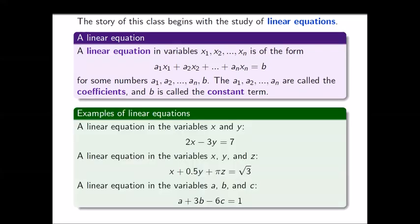Let's look at some examples of linear equations. We see three different examples. The first is a linear equation in variables x and y: 2x minus 3y equals 7. The coefficients here are 2 and minus 3, and the constant is 7.